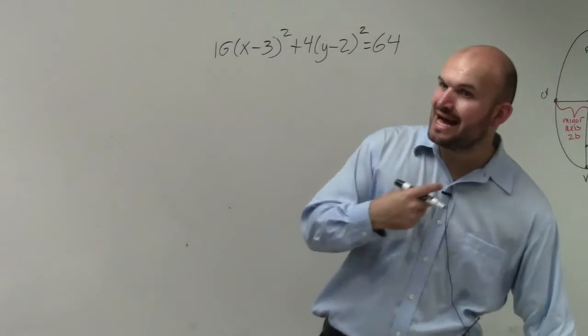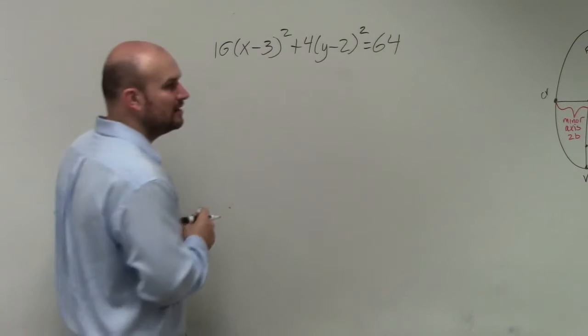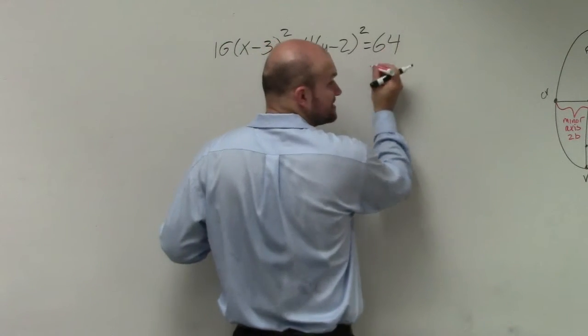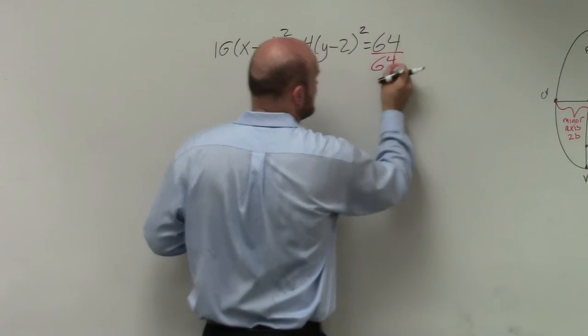In this problem, it's not equal to 1. For us to identify our a and b, we have to have it equal to 1. So I need to get the 64 to be 1, and the mathematical operation I'm going to do is divide by 64.